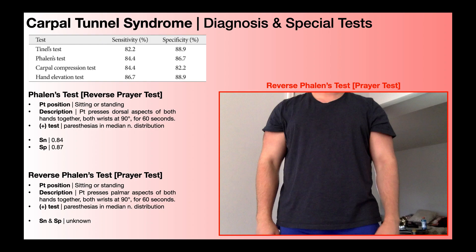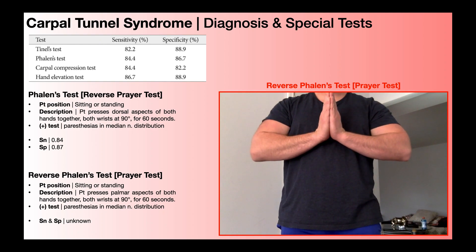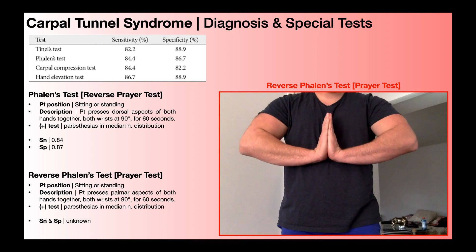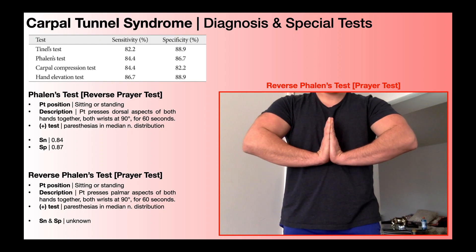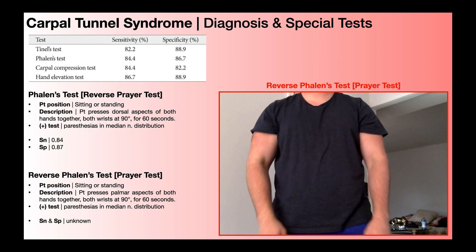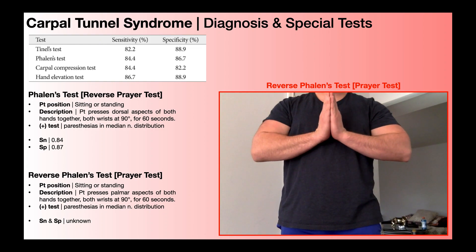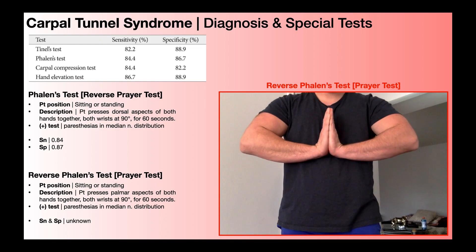To conduct the reverse Phalen's test, the patient is either sitting or standing and presses the palmar aspects of both hands together, with both wrists at least 90 degrees, and holds for 60 seconds. A positive test is reproduction of paresthesias at any point in the median nerve distribution — meaning numbness, tingling, or burning shooting pain, though generally it's numbness or tingling.